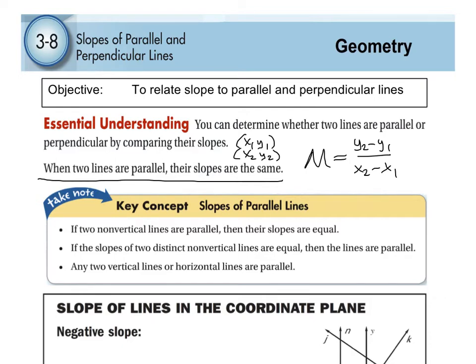Key concept: if two non-vertical lines are parallel, their slopes are equal. Non-vertical means not straight up and down. If the slopes of two distinct non-vertical lines are equal, then the lines are parallel. Also, any two vertical lines or horizontal lines are parallel. Remember, vertical is straight up and down, horizontal is left to right — those are parallel as well.